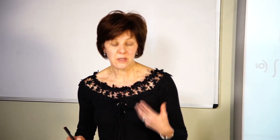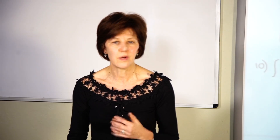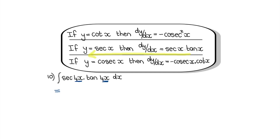They might also ask for the integral of sec 4x tan 4x dx. Searching through integration rules you won't find one, but looking through differentiation rules I see that the derivative of sec x is sec x tan x. Using this rule backwards, the integral of sec x tan x is sec x. Since the angle here is 4x, the answer is sec 4x divided by 4, plus the constant.